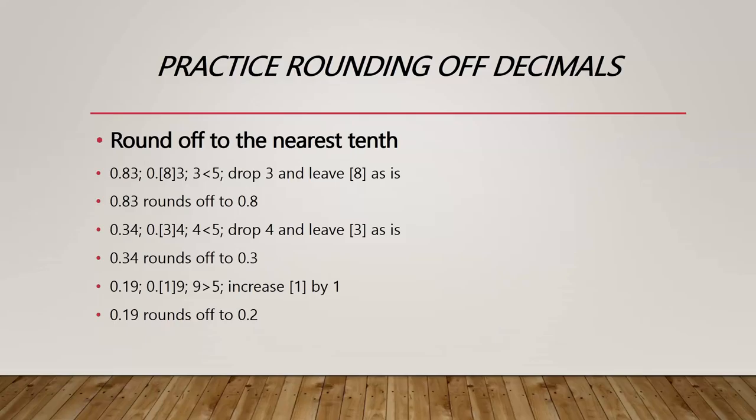0.34 — same technique: we put the brackets on the 3. We notice 4 is less than 5, so we drop the 4 and the bracket number stays as is. 0.34 rounds off to 0.3. For 0.19, the bracket is on the 1. We notice 9 is greater than 5, so we increase the bracket number by 1. 0.19 rounds off to 0.2.